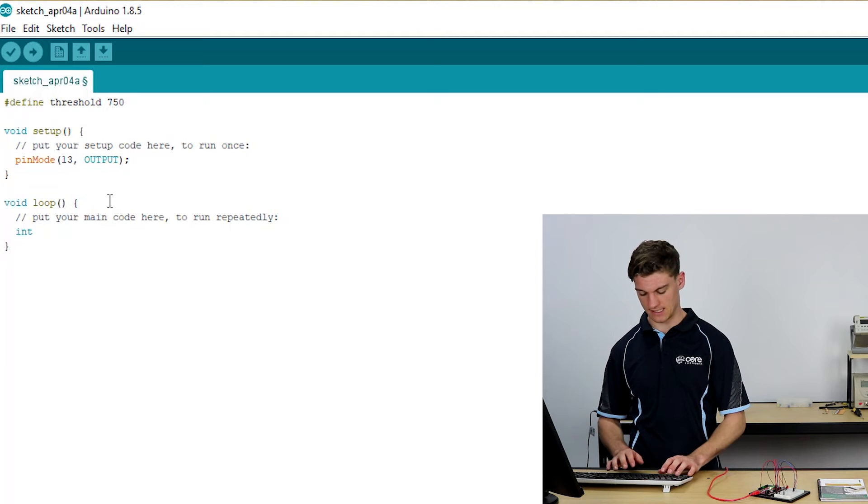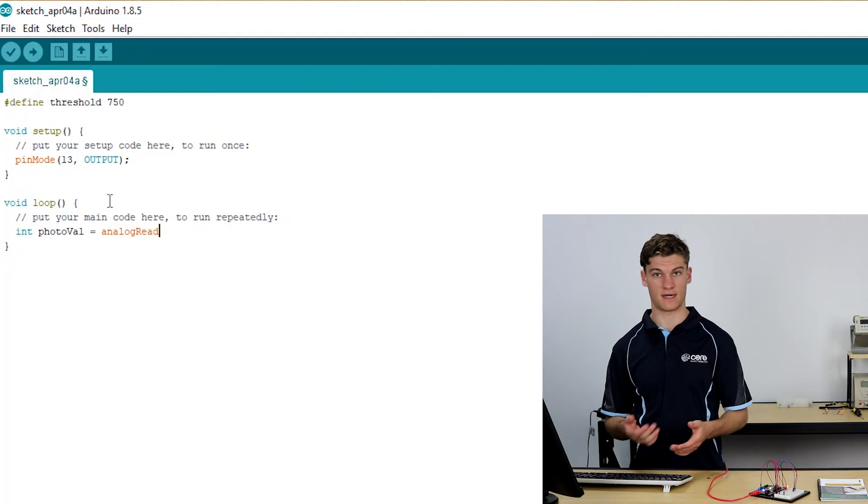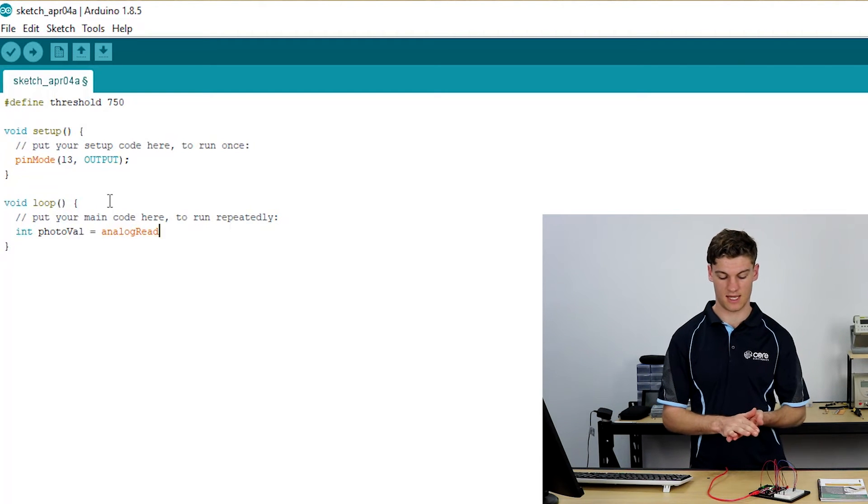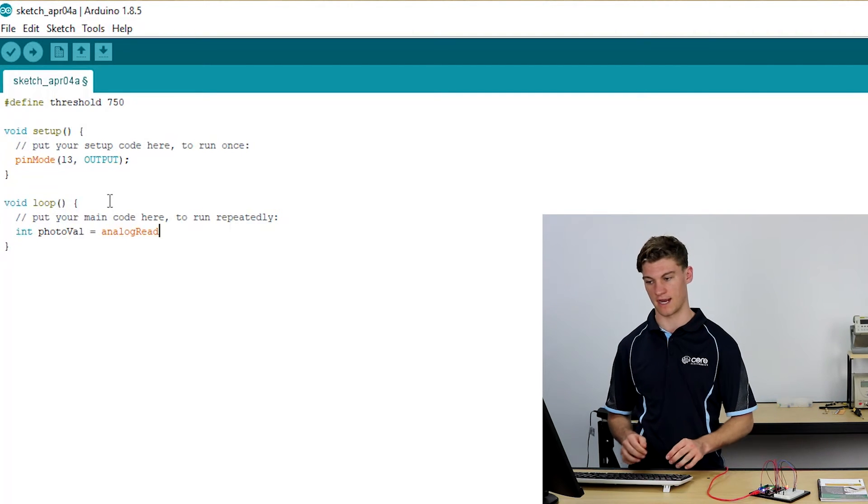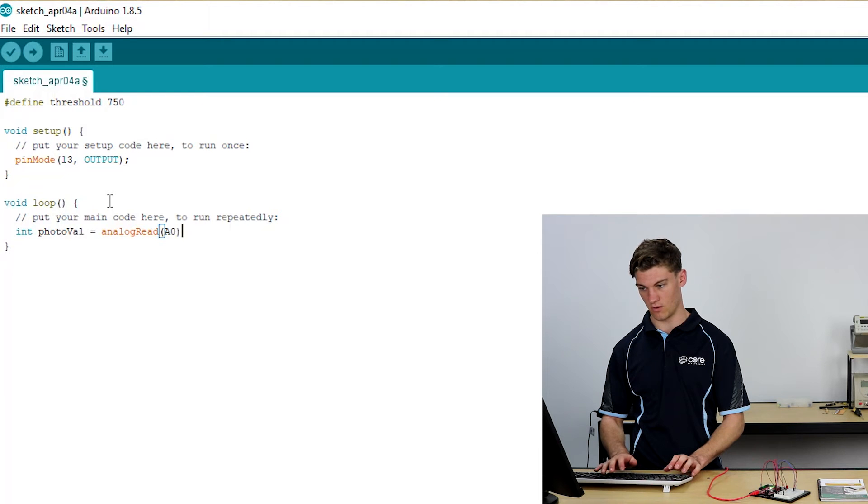So we're going to say int photoval. Int photoval is equal to analog read. Once again it's similar to the previous reading that we used for the potentiometer because they're both analog components and they're both at A0. So we're analog reading A0.